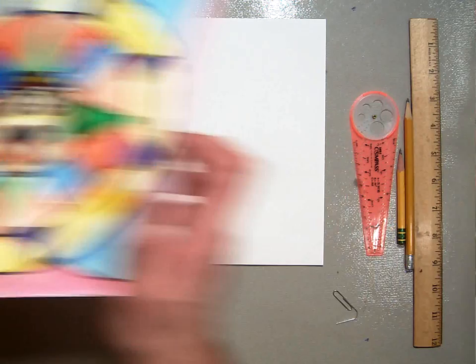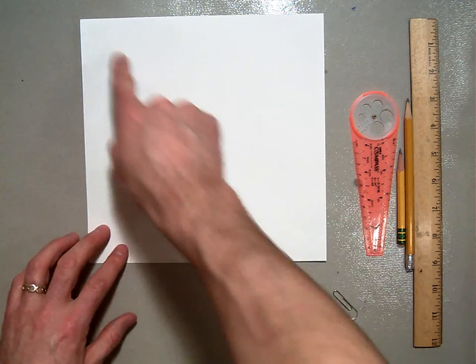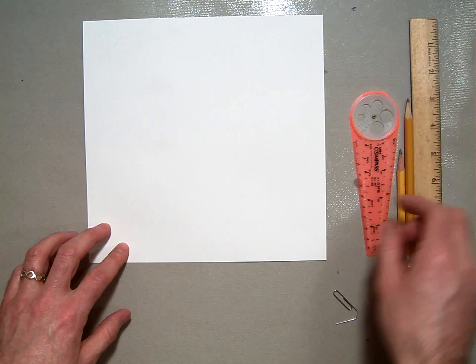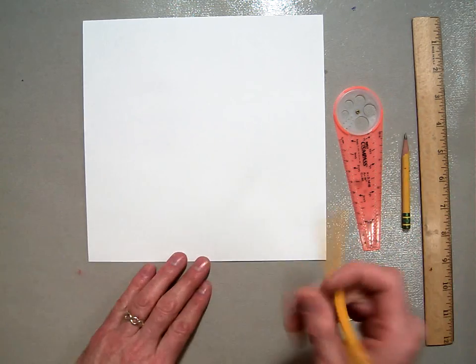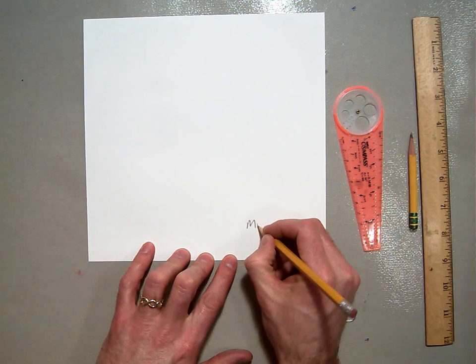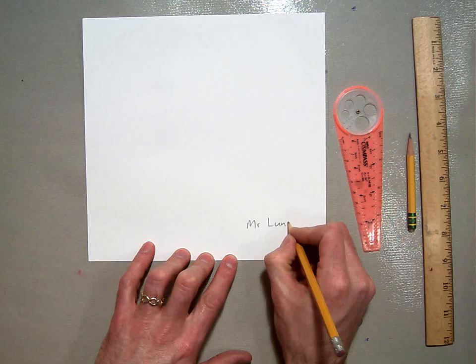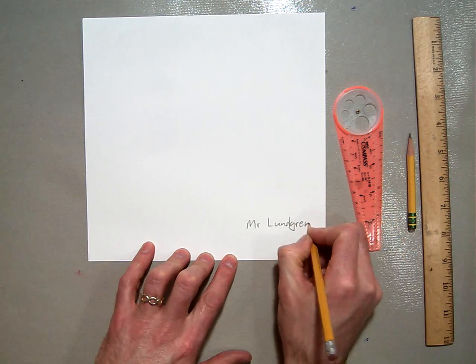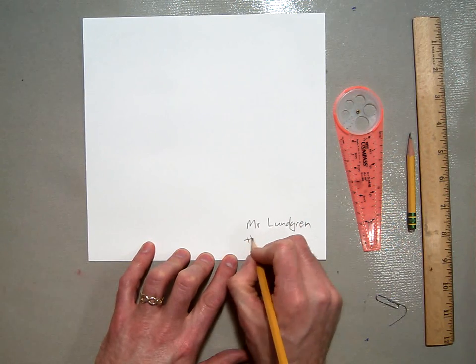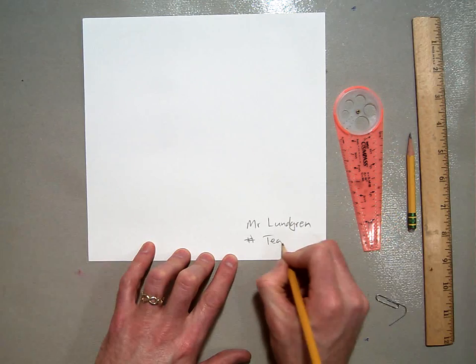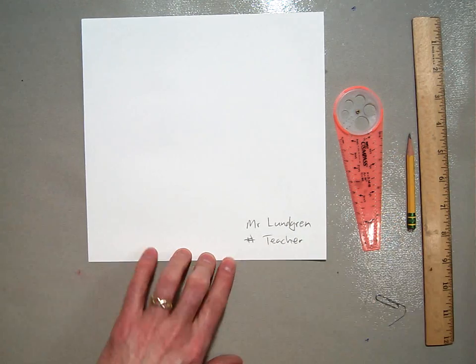To get started, you're going to need a square piece of paper. This one happens to be nine by nine. Write your name on the back. My name being Mr. Lundgren, I'll write that nice and clearly. And then write your grade number and your homeroom teacher on the back, whoever that happens to be.